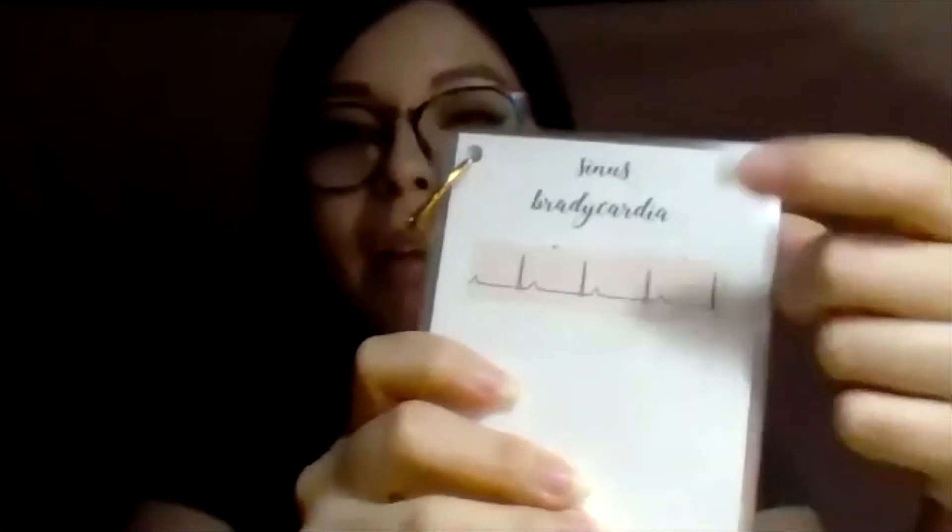Most signs and symptoms for these rhythms are pretty similar, with some differences. For the flashcards, Letty included nursing interventions and medications as the most important things to know. On the front she put the name of the rhythm with an example strip. On the back: nursing interventions for asymptomatic and symptomatic presentations, and the relevant medications — like anticholinergic medications for one rhythm.